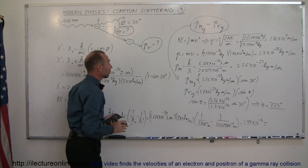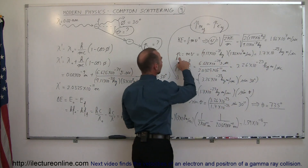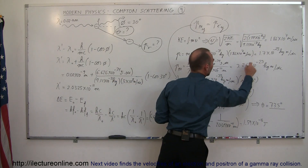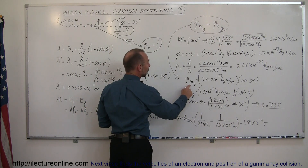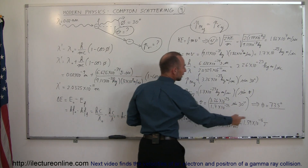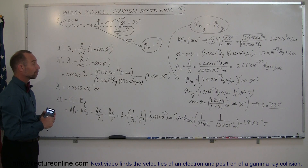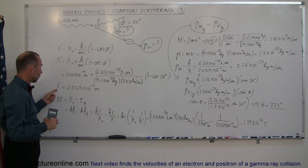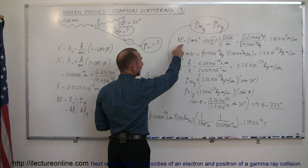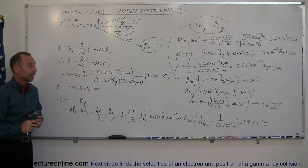73.5 degrees is the scatter angle of the electron. So we were able to find the velocity of the electron, which allowed us to find the momentum of the electron as mv. Then we know the momentum of the photon is h over lambda — notice the two are relatively similar, which is good. We then said the y-component of the photon's momentum equals the y-component of the electron's momentum, set them equal, solved for sine of theta, and took the arc sine to find theta equal to 73.5 degrees. Using Compton scattering you can find the changed wavelength, the changed energy of the photon, which gives the kinetic energy of the electron, from which you find the velocity, then the momentum, and finally the scatter angle.